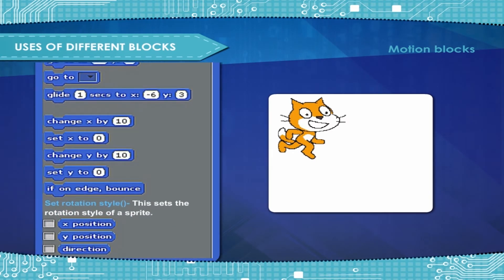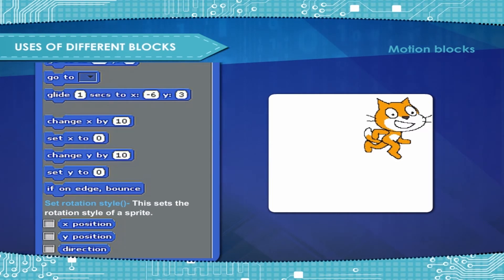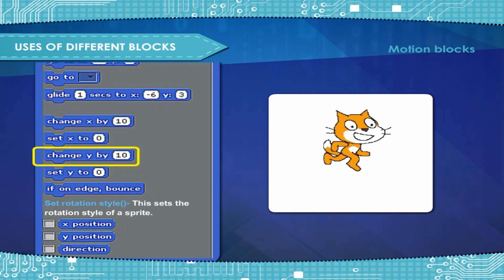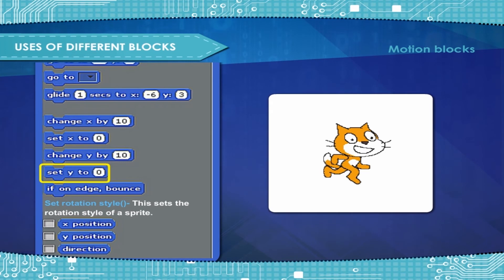Change X by: Changes the sprite's X position by the amount. Set X to: Sets the sprite's X position to the amount. Change Y by: Changes the sprite's Y position by the amount. Set Y to: Sets the sprite's Y position to the amount.